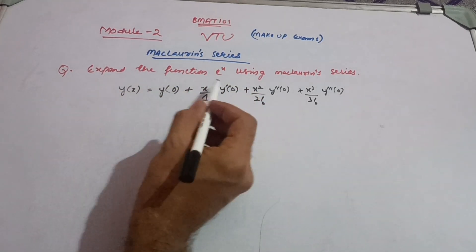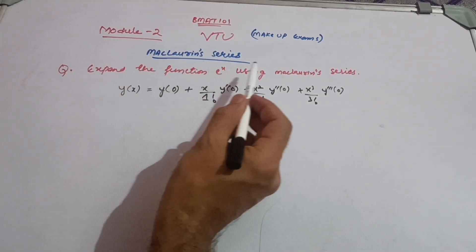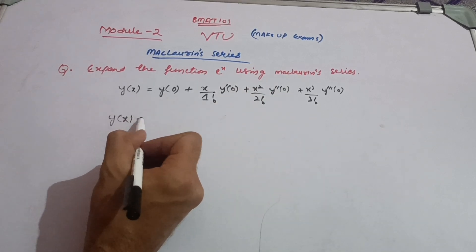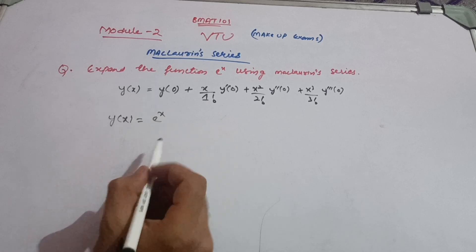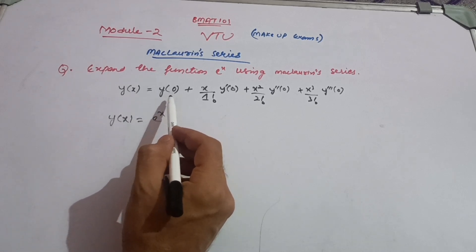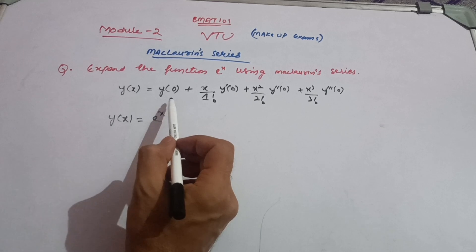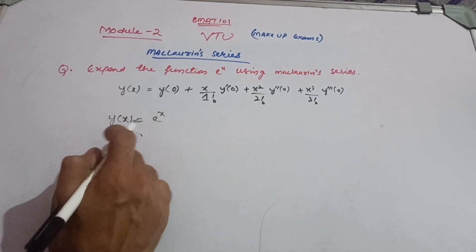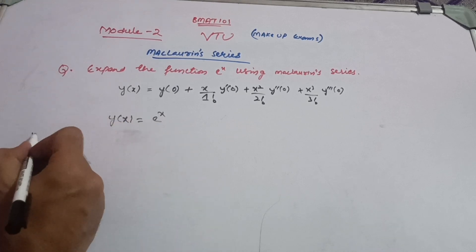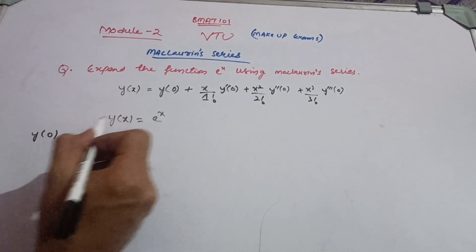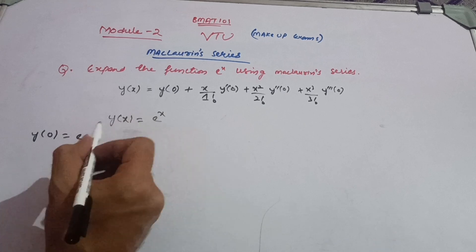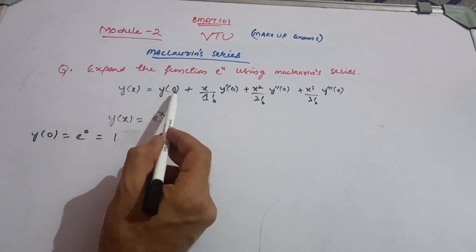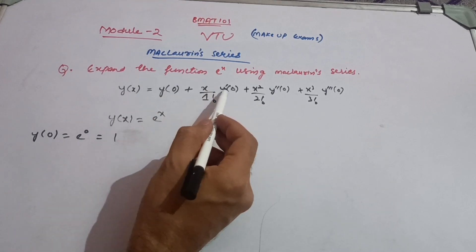Now the function y(x) is given. The question says: expand e^x using the Maclaren series. So I write y(x) = e^x. First, I have to calculate y(0), which means I put x = 0. So y(0) = e^0. Anything raised to the power 0 is equal to 1, so we get y(0) = 1.